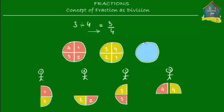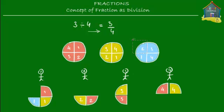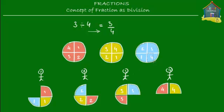Now how about the third pizza — the third blue pizza? Let's divide pizza number 3 among the 4 friends: give this one to friend number 1, 2, 3, and 4. So this one goes here to friend number 1, this one to friend number 2, this one to friend number 3, and this one lastly goes to friend number 4.